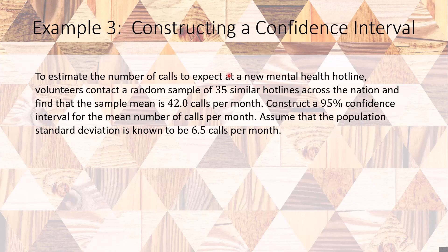To estimate the number of calls to expect at a new mental health hotline, volunteers contacted a random sample of 35 similar hotlines across the nation and found that the sample mean is 42 calls per month. We want to construct a 95% confidence interval for the mean number of calls per month. We are going to assume that the population standard deviation is 6.5 calls per month.